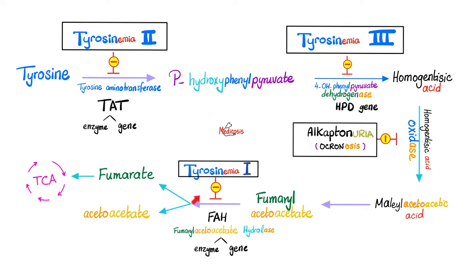Tyrosinemia type 1 is a problem in fumarylacetoacetate hydrolase — the FAH gene. Tyrosinemia type 2 is a deficiency of tyrosine aminotransferase — TAT gene mutation. Tyrosinemia type 3 involves 4-hydroxyphenylpyruvate dehydrogenase — HPD gene mutation. The gene is typically named after the enzyme or protein it encodes.